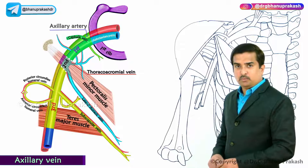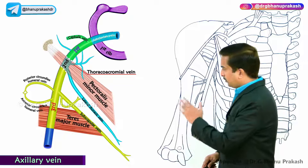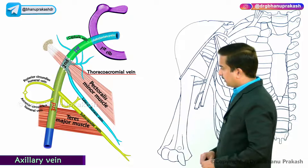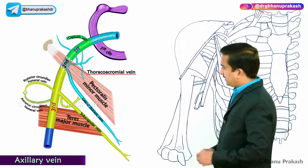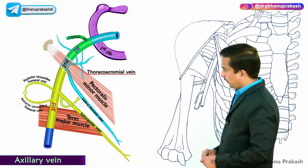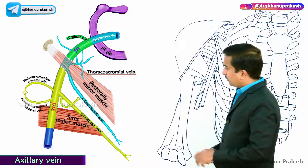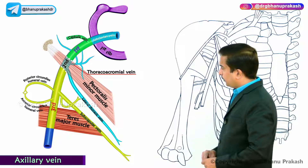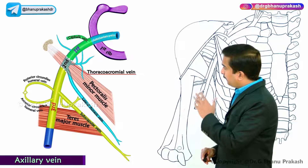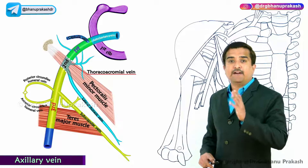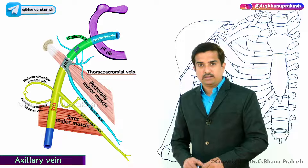To summarize: tributaries of the third part are the subscapular vein and anterior and posterior circumflex humeral veins; tributaries of the second part are the thoracoacromial vein and lateral thoracic vein; and the tributary of the first part is the cephalic vein, which forms the subclavian vein.